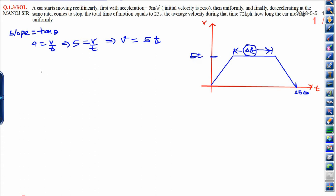After that, uniform rate. Average velocity is also given. V average equals 72 times 5 by 18, and it will be 20 meters per second.